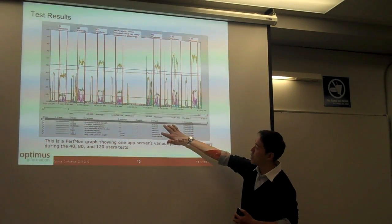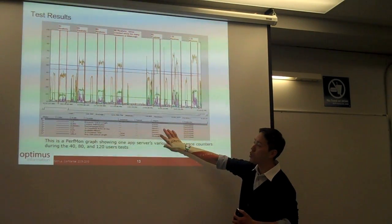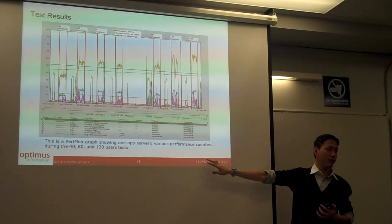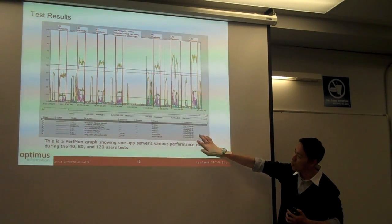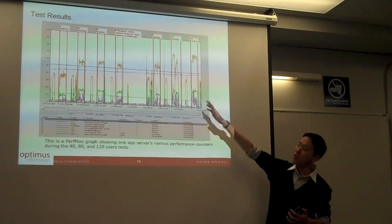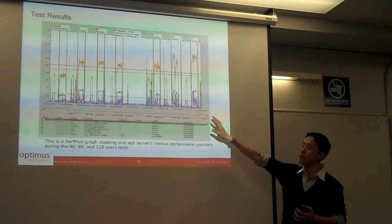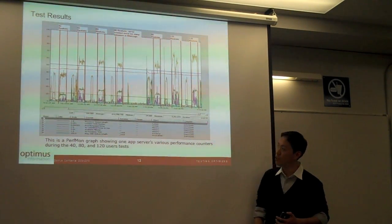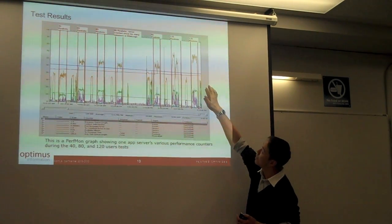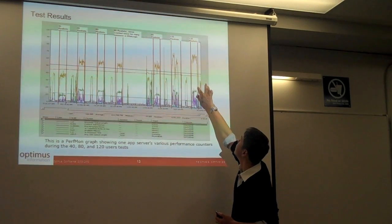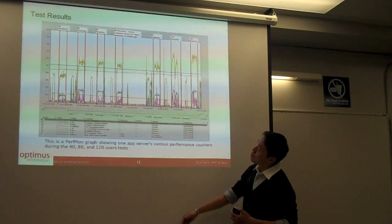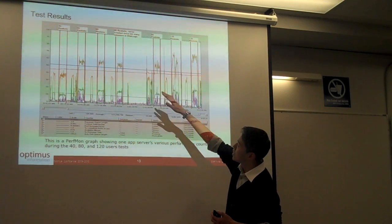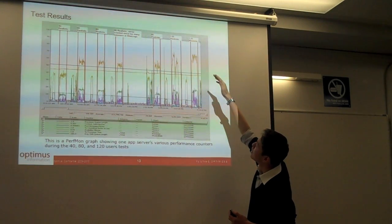You can add different counters because Perfmon by default basically logs everything. If you include all the counters on the graph, you won't see any white space on the graph - it's everywhere. So you just filter them out and just look at the ones that are meaningful to you, and then you'll come up with a graph like this. Let's say the yellow one is CPU utilization - it kind of makes sense because with 40 users, CPU is only around 35-40%, 80 users 60%, and then 120 a bit higher, maybe 80%.